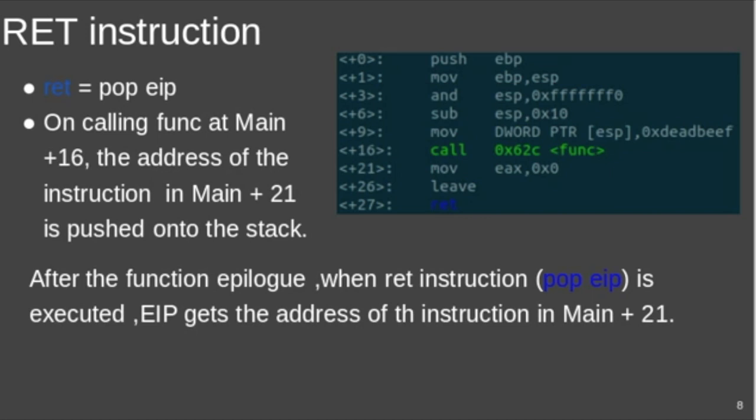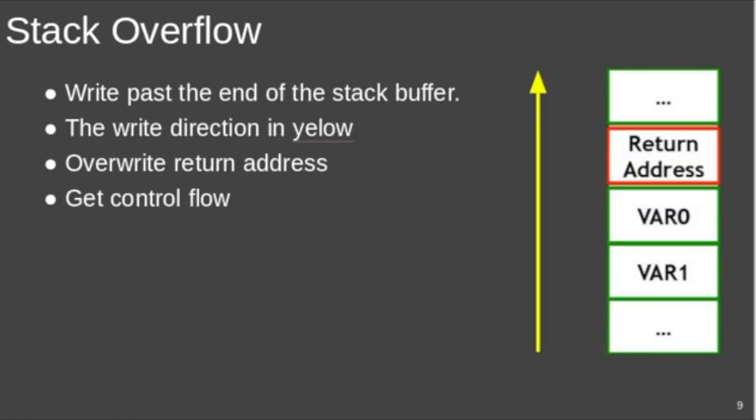Consider that our primary aim is to get a shell. Also, we are provided with an address that has a shell code. Now what we need to do is overflow the stack, and at the return address you need to override it with that address. So when it encounters a ret instruction, a shell is opened. This is how you get the control flow.